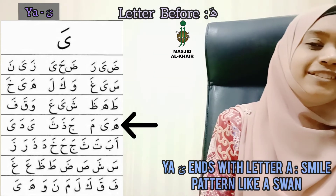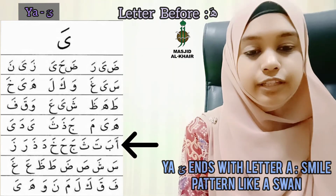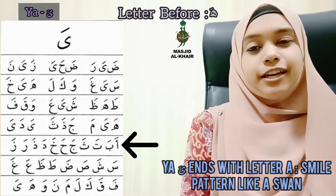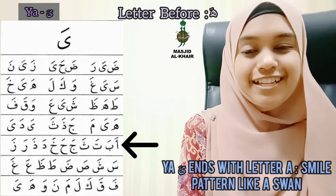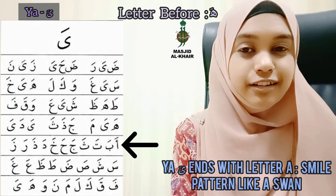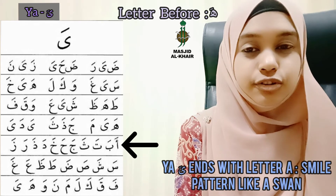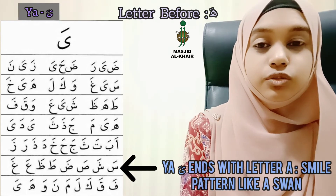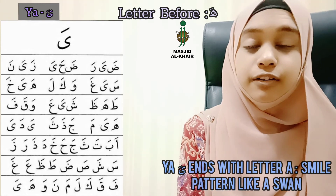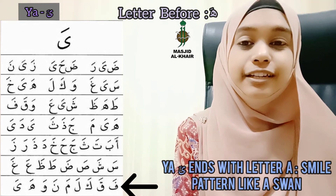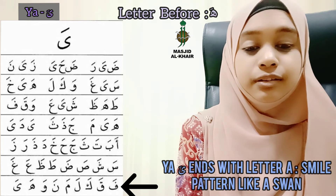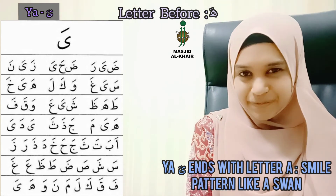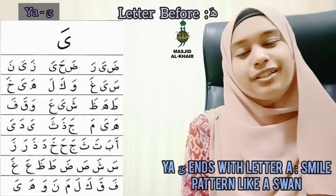Alhamdulillah. So now we are going to read A till your YAH from the start till the end together. A-ba-ta, Sa-ja-ha-ha, Da-da, Ra-za, Sa-sa, Ba-ta, Za-a-fa, Fa-qa-ta, La-ma-na, Wa, Ha, Ya. Very good, Alhamdulillah. We have read from A till your YAH.